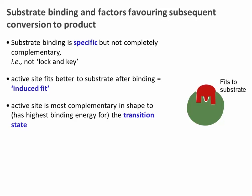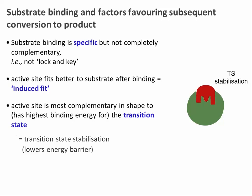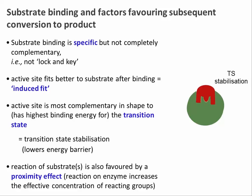By providing better complementarity and better non-covalent interactions, the awkward transition state is stabilized and the energetic barrier between substrates and the transition state is lowered. Finally, for reactions with more than one substrate, the ability of enzymes to bring all of them into close proximity and in exactly the right orientation also favors the formation of the correct products. Compared with accidentally bumping into each other in solution as in an uncatalyzed reaction, an enzyme can increase the effective concentration of the reacting groups.